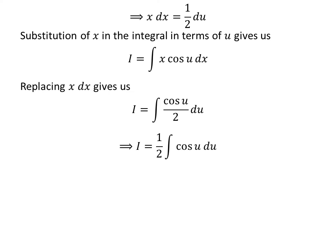As half is a constant, taking out the constant gives us I is equal to half times integral of cosine of u with respect to u.